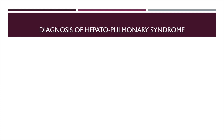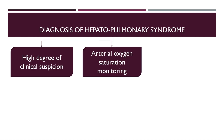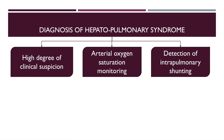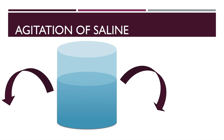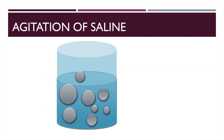The diagnosis of hepatopulmonary syndrome requires a high degree of clinical suspicion and involves arterial oxygen saturation monitoring. We can also go in for detection of intrapulmonary shunting. The technique involves a jar or bottle of saline which is agitated or shaken from side to side, resulting in the formation of bubbles.